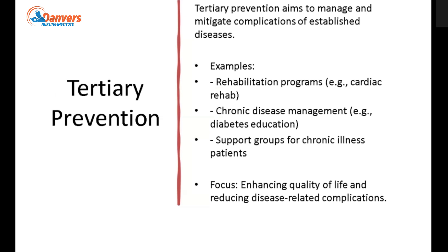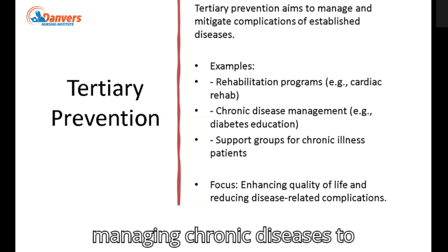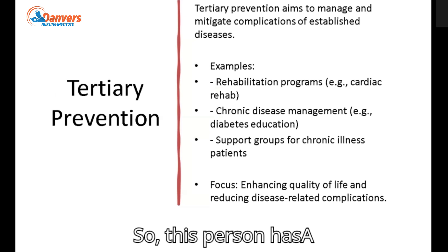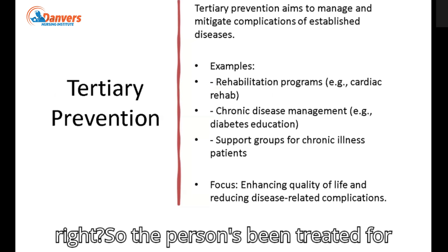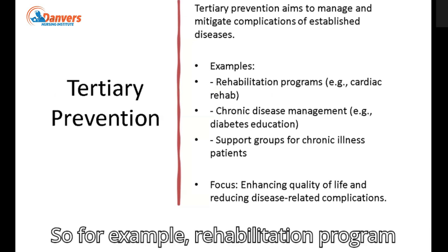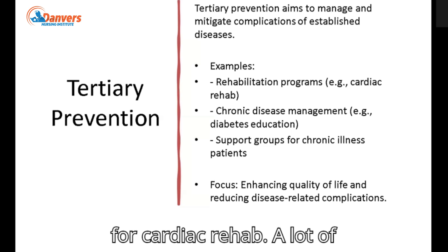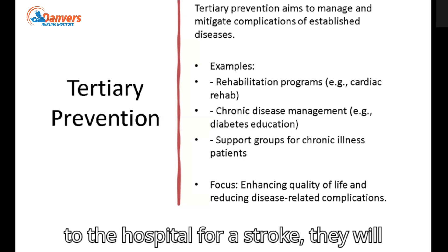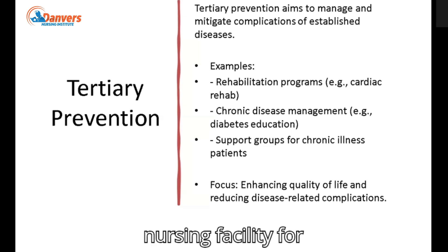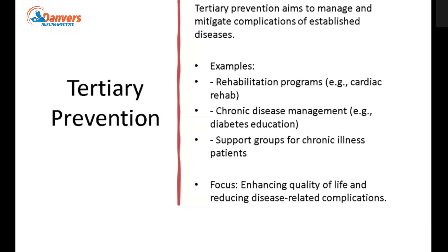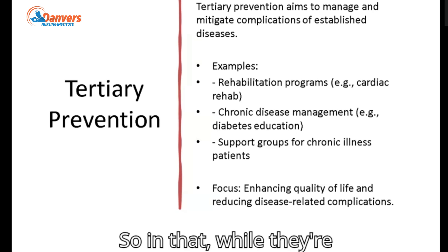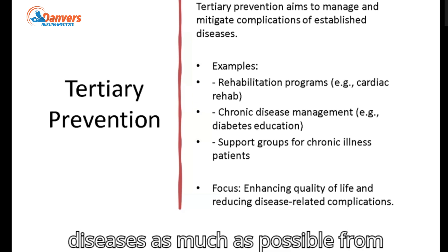For tertiary prevention, the focus is on managing chronic diseases to prevent further complications or deterioration. For example, if a person has had a stroke, they've been treated so that it doesn't get worse. A rehabilitation program like cardiac rehab — if a patient goes to the hospital for a stroke, they may do a stent and then be released to a long-term care or skilled nursing facility for rehab, where they can get physical and occupational therapy while receiving a high level of nursing care, rehabilitating and preventing further disease as much as possible.